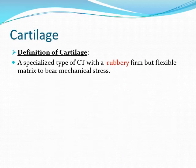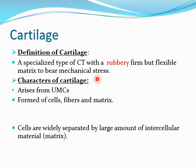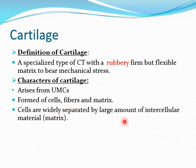By definition, cartilage is a type of connective tissue in which the matrix is rubbery, firm, as well as flexible. These characters allow it to bear mechanical stress. It arises from undifferentiated mesenchymal cells, and is formed of cells, fibers, and matrix. The cells are widely separated by large amounts of matrix, which helps in bearing mechanical stress.